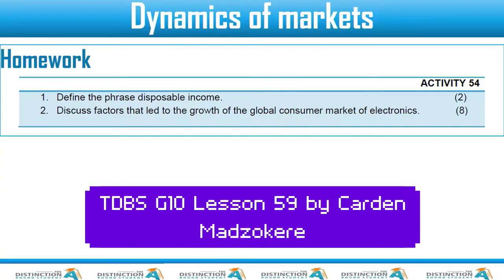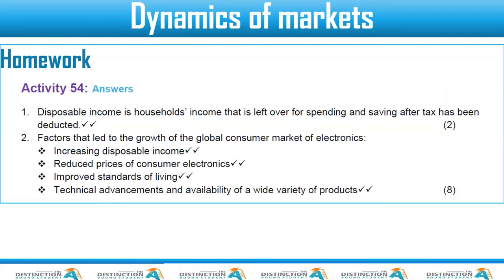As usual, we start with our homework. The first question was: define the phrase 'disposable income' and then discuss factors that led to the growth of the global consumer market of electronics. Disposable income is household income that is left over for spending and saving after tax has been deducted. The factors that led to the growth include: increase in disposable income, reduced prices of consumer electronics, improved standards of living, and technical advancement and availability of a wide variety of products.